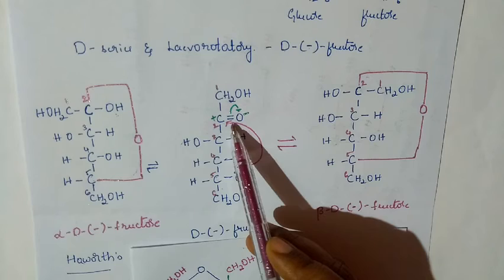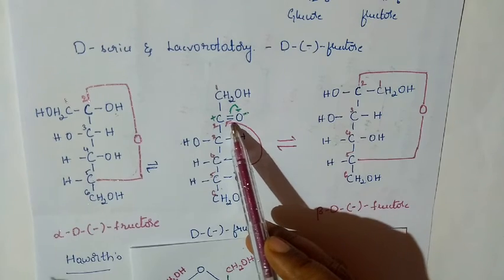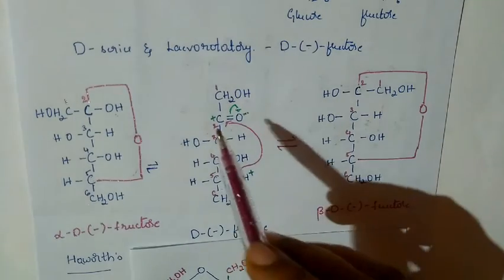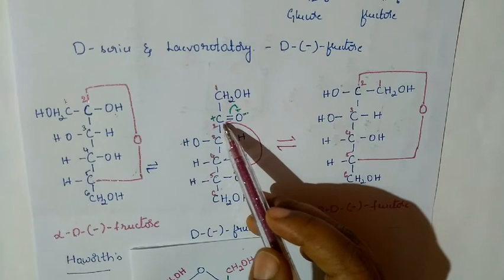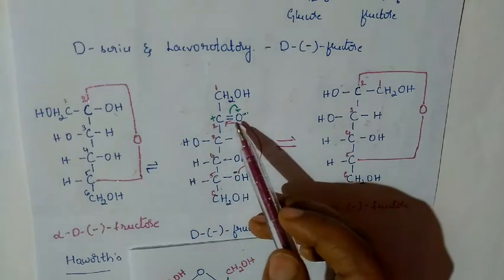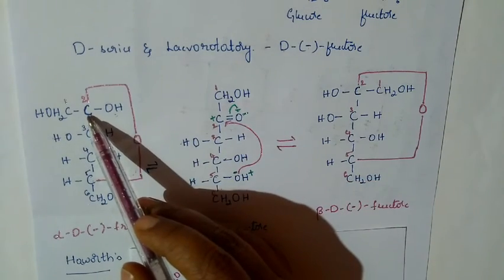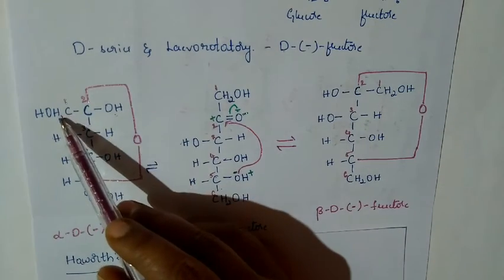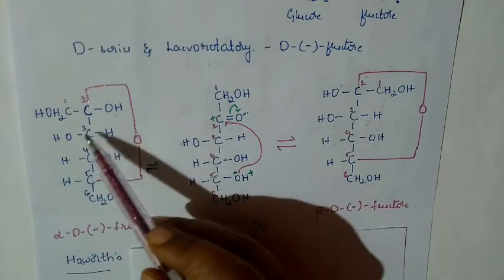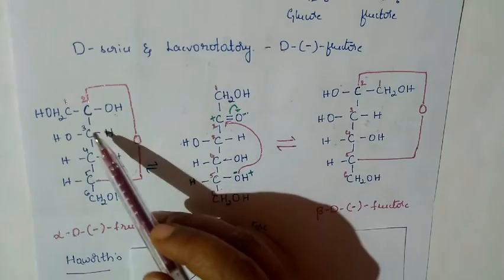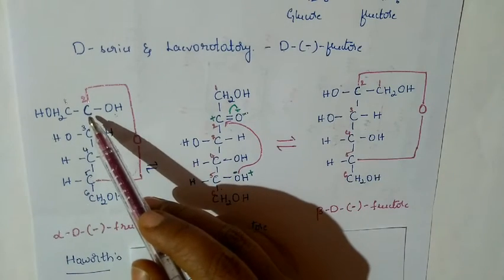This is the ketonic carbon, as discussed yesterday. In the open chain structure, the ketonic carbon is not a chiral carbon. But in the cyclic structure, the ketonic (non-chiral) carbon is converted into a chiral carbon. You can observe it is now a chiral carbon — one side has CH₂OH, another side has OH, and it is bonded with oxygen, so four different groups are present.